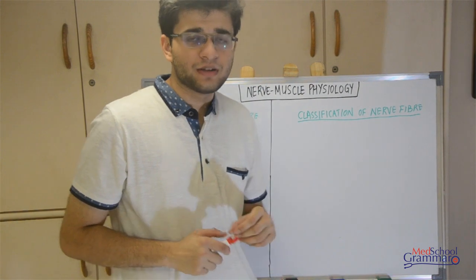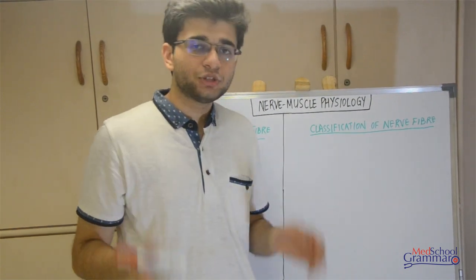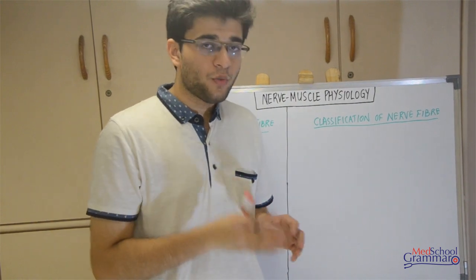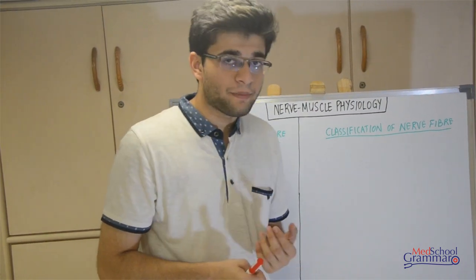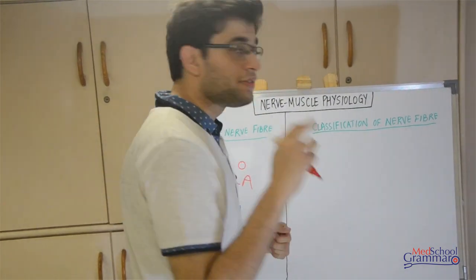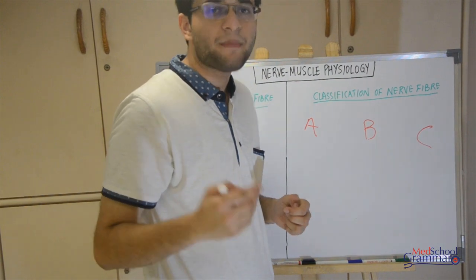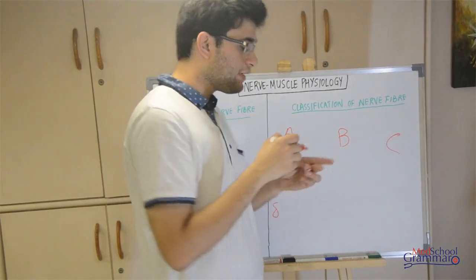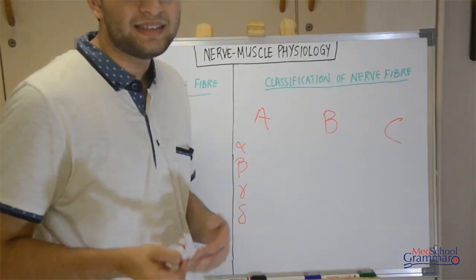Now moving to the classification of nerve fibers. The most commonly used is the Erlanger-Gasser classification. These two scientists received the Nobel Prize in 1944 for discovering highly specific functions of nerve fibers. The main classification includes three types: A, B, and C nerve fibers. Type A is further classified into alpha, beta, gamma, and delta.